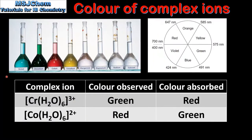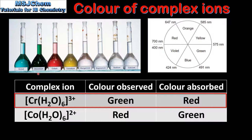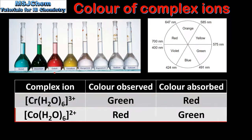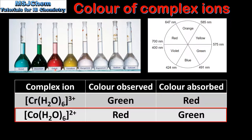Next we look at a couple more examples. The solution of chromium ions appears green. Using the colour wheel we can see that red light is being absorbed and its complementary colour, green, is being transmitted. The solution of cobalt ions appears red. Using the colour wheel we can see that green light is being absorbed and its complementary colour, red, is being transmitted.